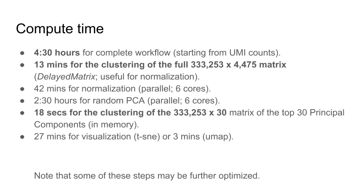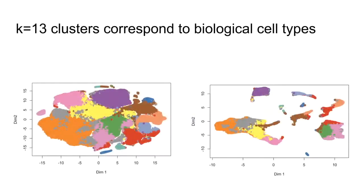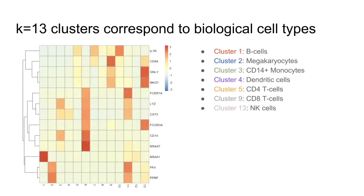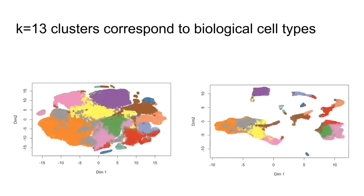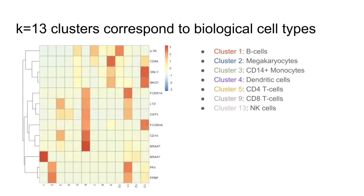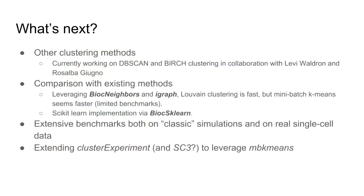I didn't spend any time optimizing these steps, so I'm not even sure if IRLBA would be faster than randomPCA in this case. And this is just to show that we have some biologically meaningful clusters in this example.